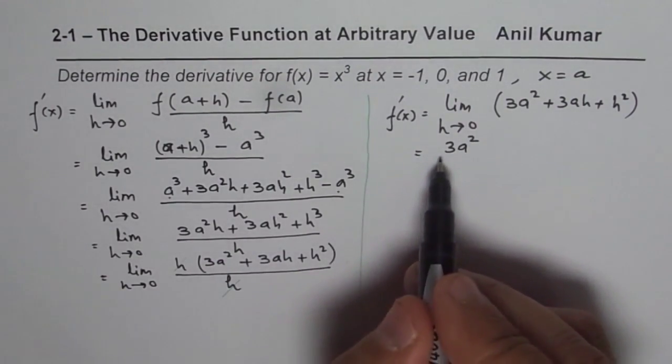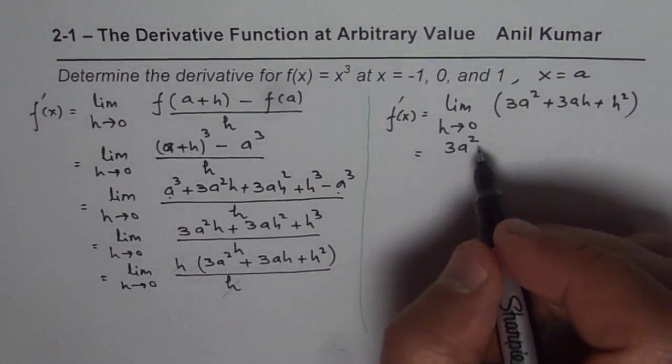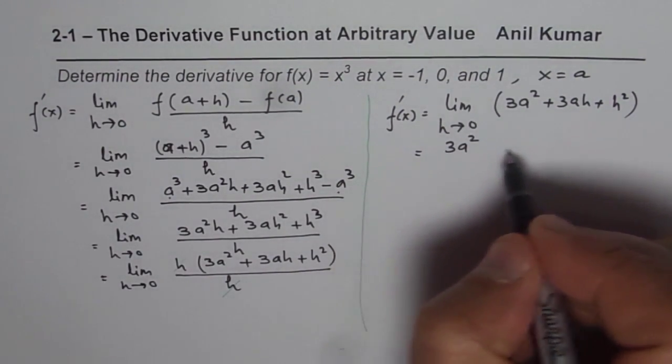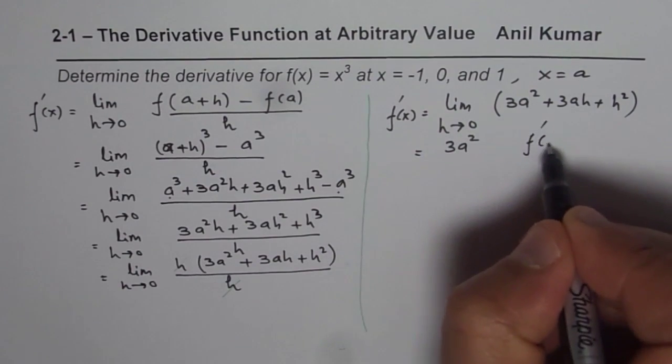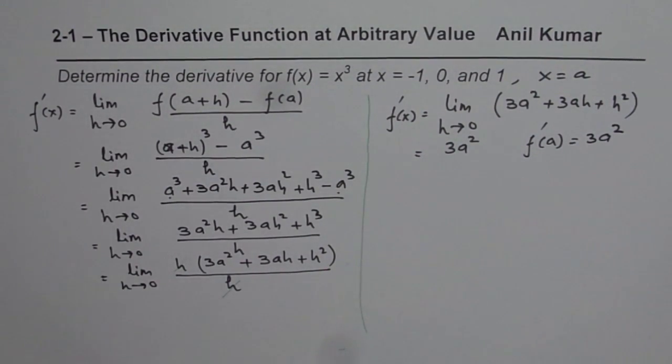So f'(x) is 3a². At any point x = a. So we could actually say f'(a) = 3a². So this is what we have got now.